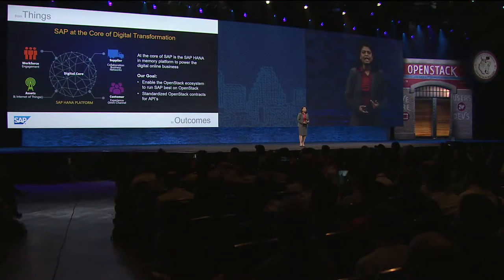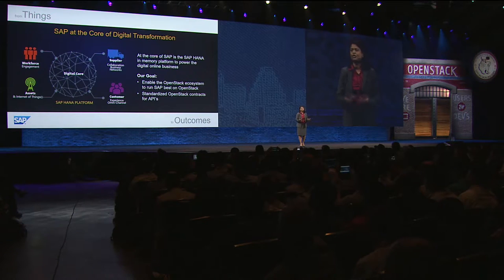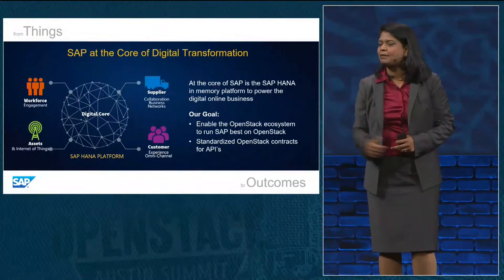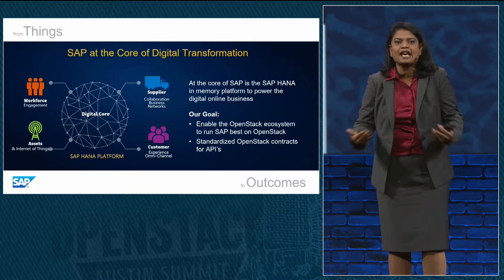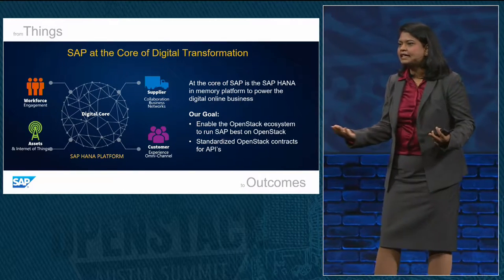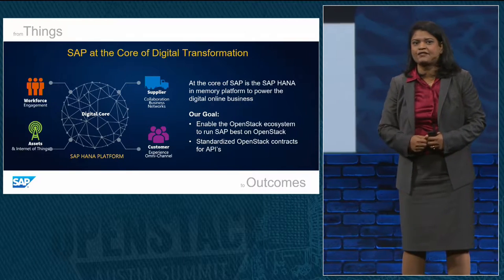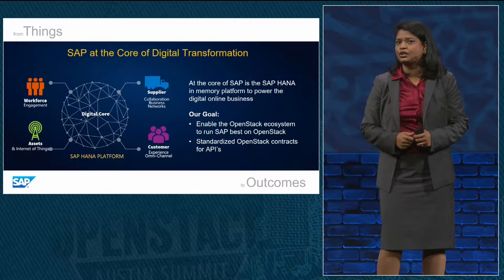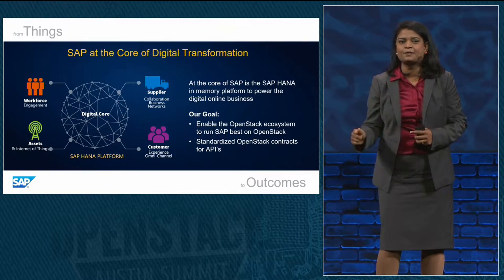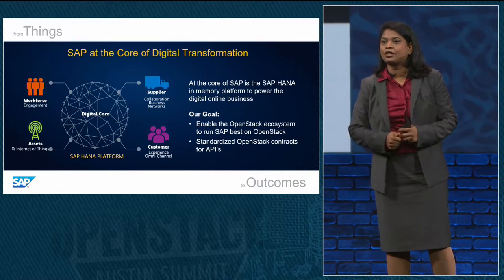Let's take a step back and look at what digital transformation really means. We have defined this transformation in four major pillars. The first being customer experience — how you engage with your customers in today's digital world. Gone are the days when customers call you if they have a service problem. Today's customers, when they have a service issue, will tweet about it and expect the service provider to respond on their Twitter handle. How you engage with your suppliers is no longer one-on-one, but leveraging the entire ecosystem and network of suppliers to optimize your end-to-end supply chain.